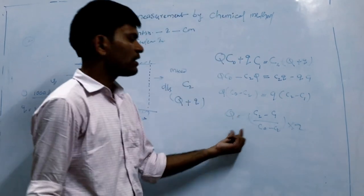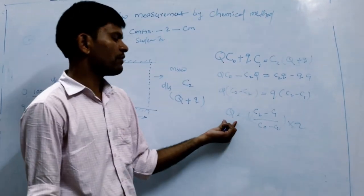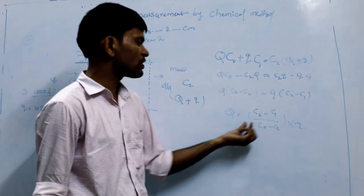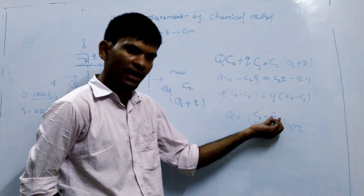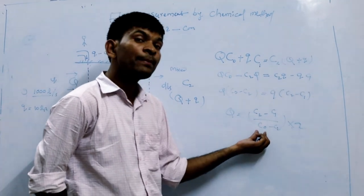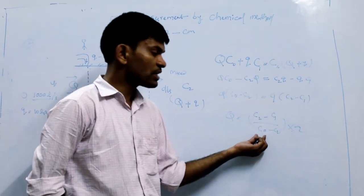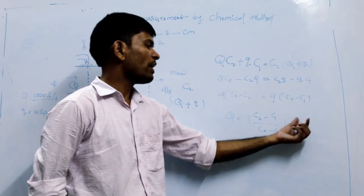This is your final equation. The volume of water flowing through this section is Q equals C2 minus final concentration minus initial concentration which you added, divided by the stream concentration, initial stream concentration minus final concentration, times the water you added.